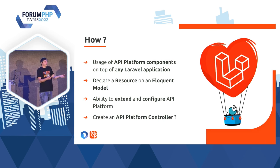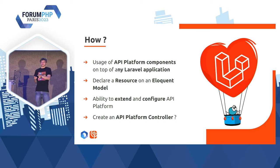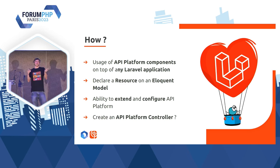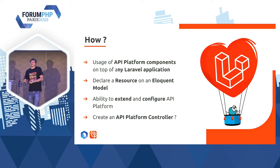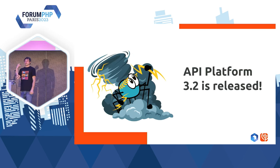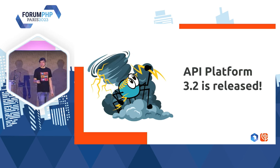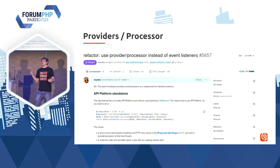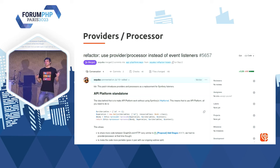Maintenant qu'on a vu pourquoi, comment est-ce qu'on peut brancher API Platform sur Laravel ? L'idée, ce serait d'utiliser des composants d'API Platform et de les brancher sur Laravel. On voulait vraiment que ça continue d'être très magique : on déclare une ressource sur un modèle et ça marche. On veut toujours que les utilisateurs de Laravel puissent étendre et configurer API Platform. API Platform 3.2 est sorti, et dans cette nouvelle version, j'ai refactoré pas mal de code d'API Platform, avec dans le but premier de libérer API Platform du kernel HTTP de Symfony.